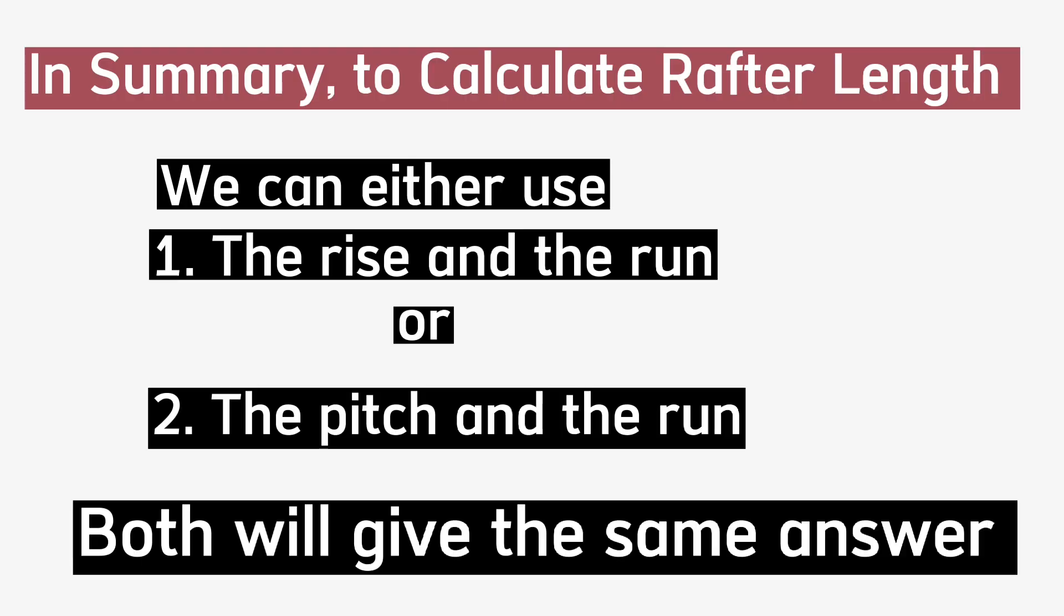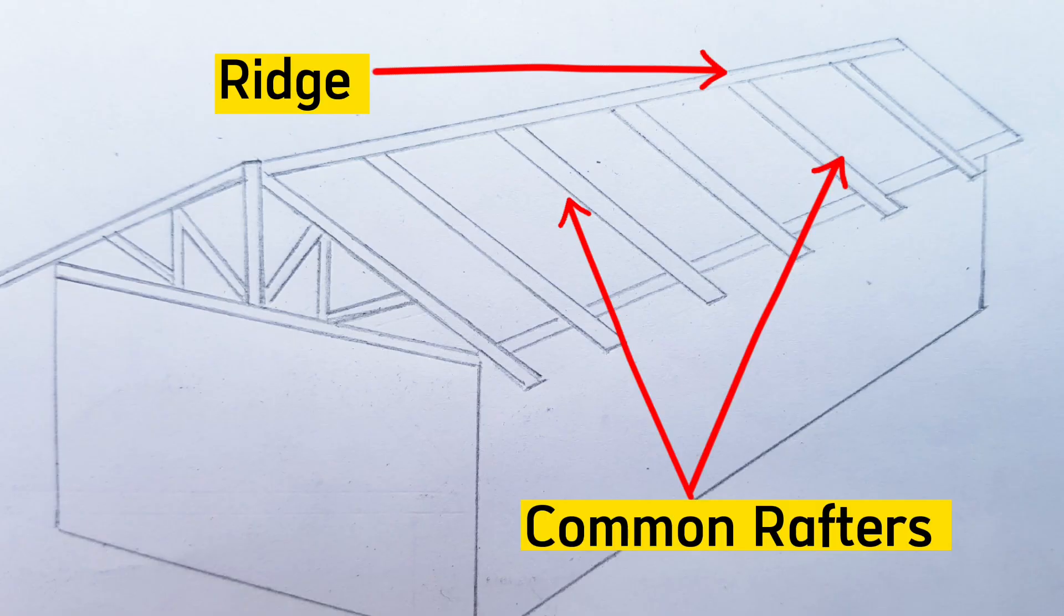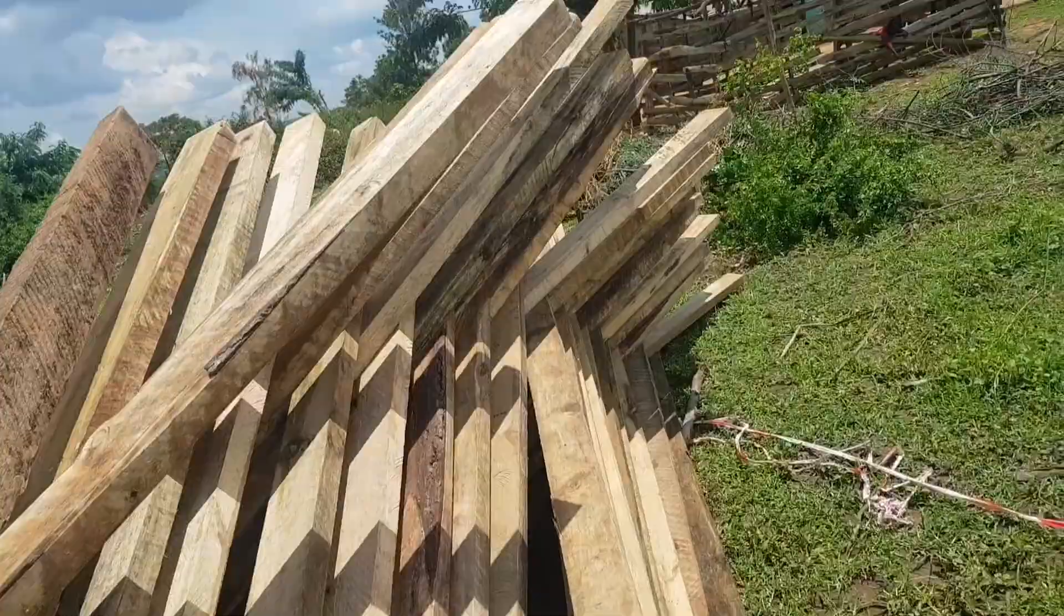In summary, we now know that when we want to determine the roof rafter length, we can either use the rise and the run, or the pitch and the run, and it will give us the same answer. We got 3.26 meters using method 1, and we also got 3.26 meters as the length of the rafter using method 2.